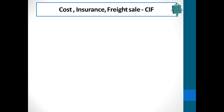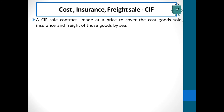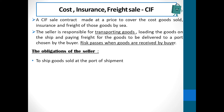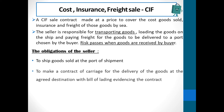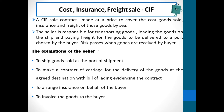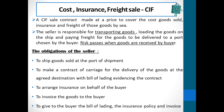Cost, Insurance, and Freight — CIF sales. A CIF sale contract is made at a price to cover the cost of goods sold, insurance, and freight of those goods by sea. The seller is responsible for transporting goods, loading the goods on the ship, and paying freight for the goods to be delivered to a port chosen by the buyer. Risk passes when goods are received by the buyer — that is when risk passes from the seller to the buyer. The obligations of the seller include: shipping goods to the port; making a contract of carriage for delivery of goods at the agreed destination, with the bill of lading as evidence; arranging insurance on behalf of the buyer; invoicing the goods to the buyer; and giving the buyer the bill of lading, the insurance policy, and the invoice.